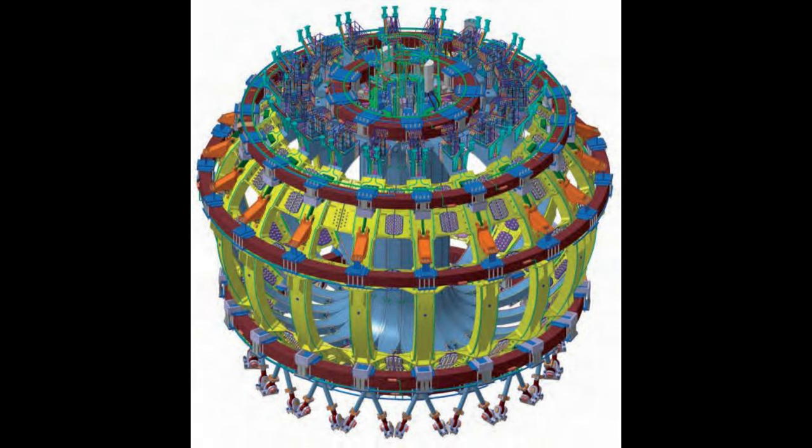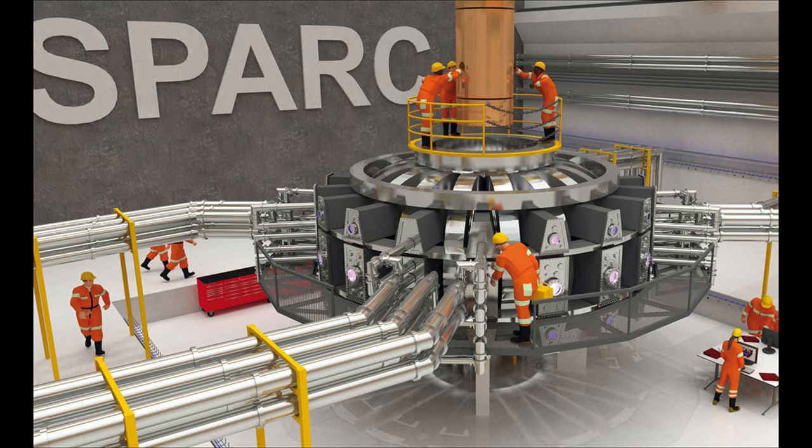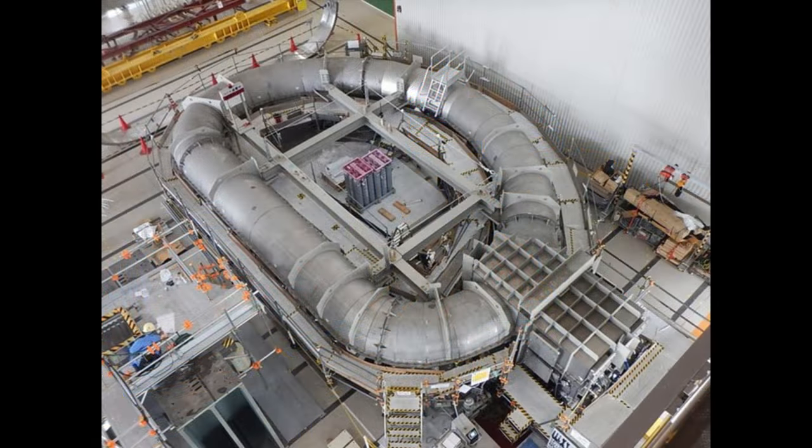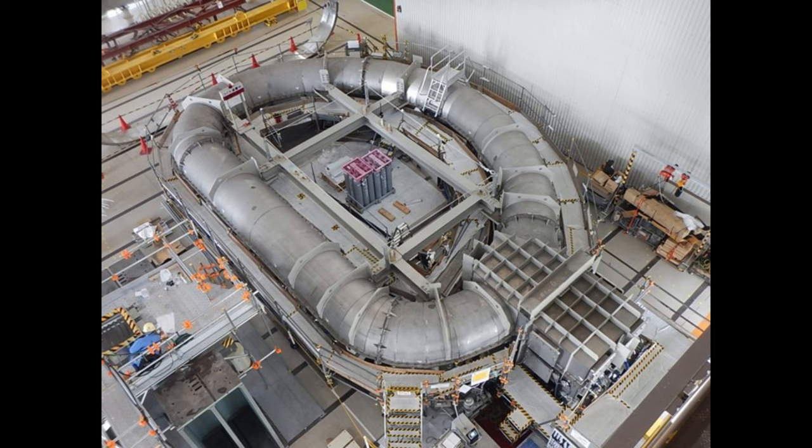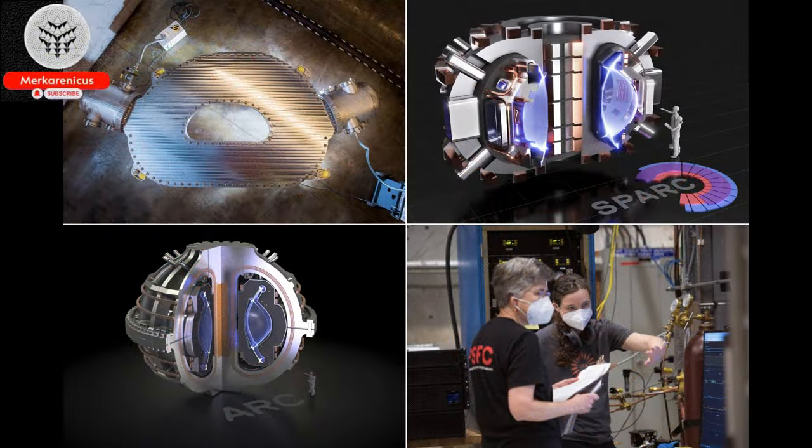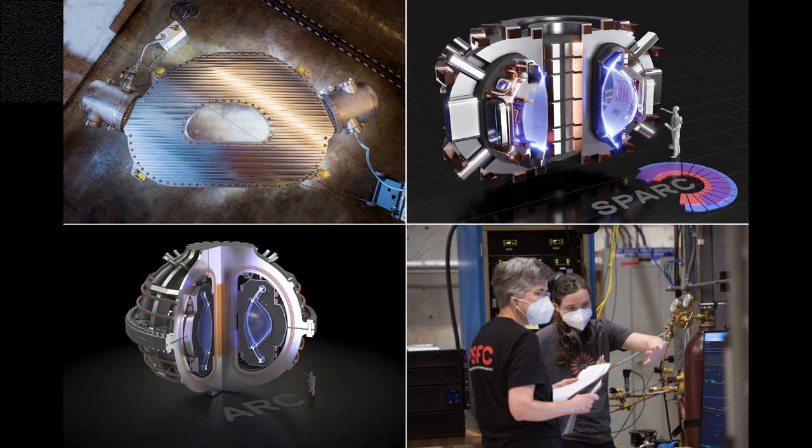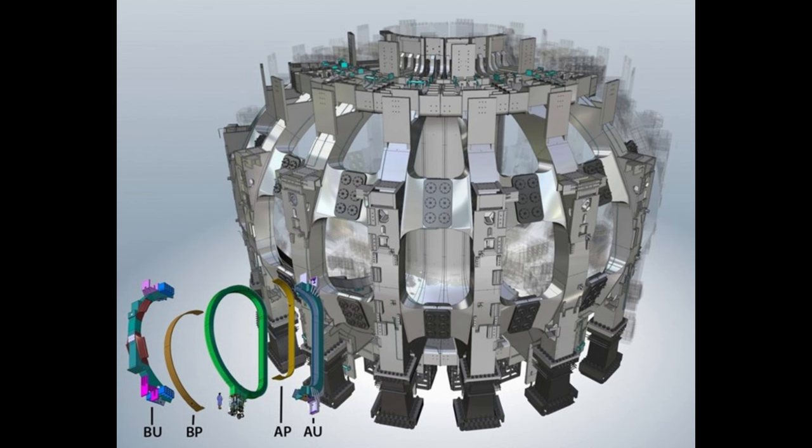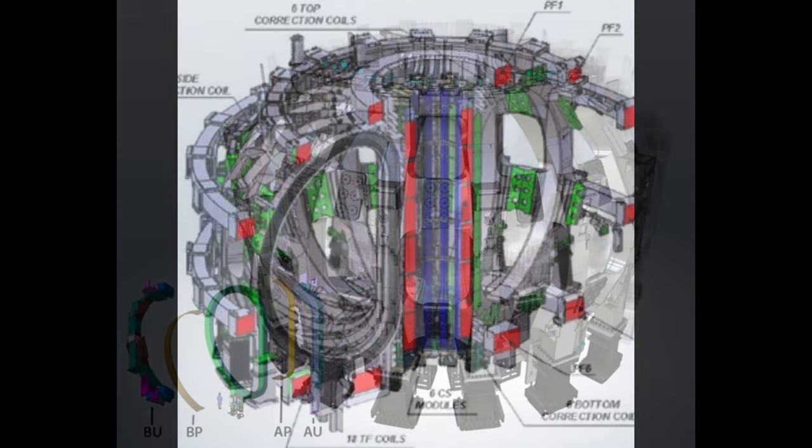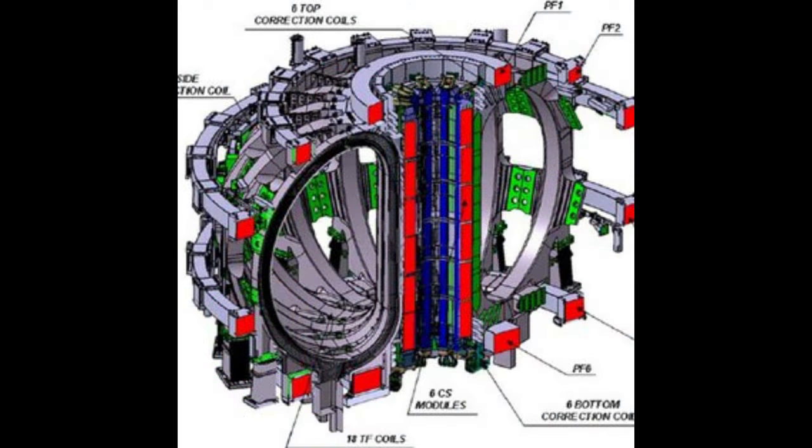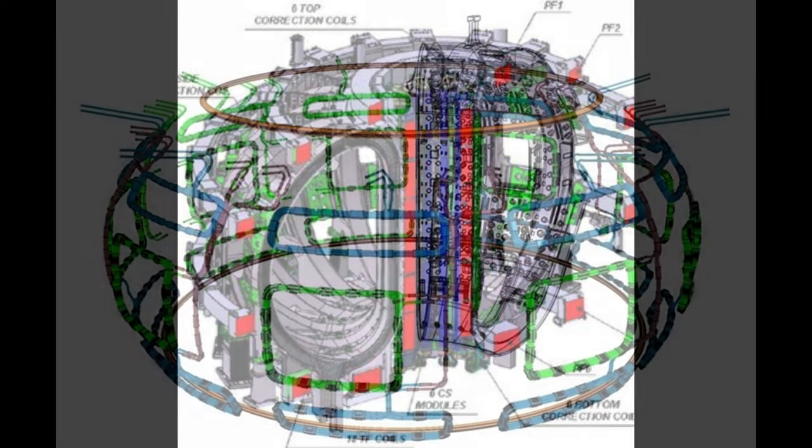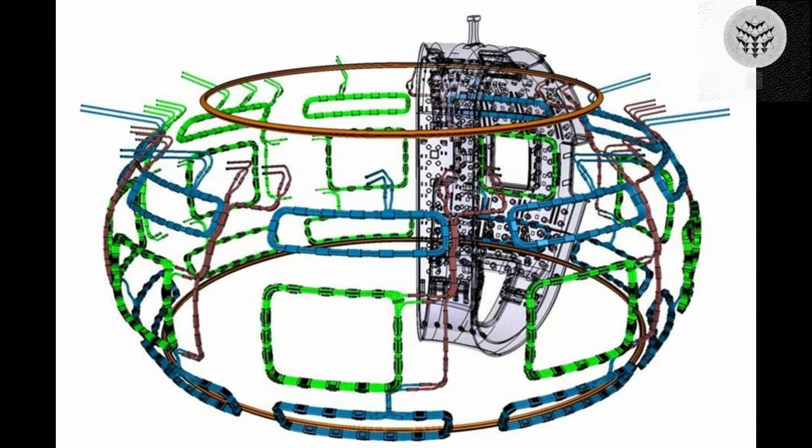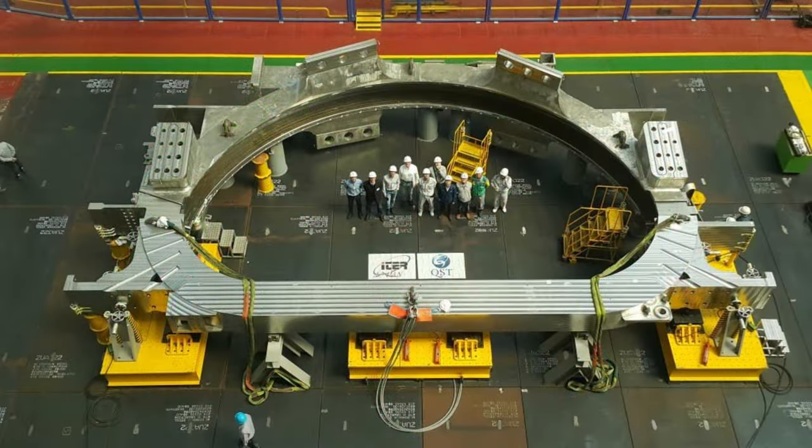According to White, the team intentionally subjected the coil to the most detrimental conditions after thoroughly evaluating all other aspects of its performance. Surprisingly, the majority of the coil emerged unscathed, with only a small portion experiencing melting. This damage was limited to a mere fraction of the coil's total volume. Consequently, these findings prompted modifications to the design, ensuring that the magnets in the actual fusion device will remain undamaged, even in the harshest circumstances.